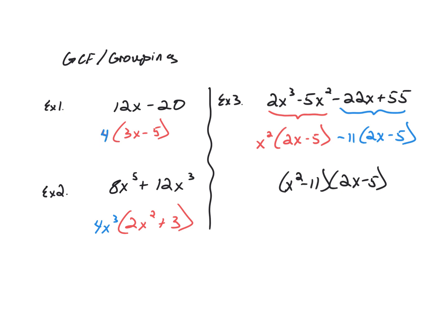12 is divisible by 4 and 20 is divisible by 4, and that's the largest number that goes into both. We take out the 4, and the other factor remaining is what we multiply 4 by to get back to the original. So 4 times 3x is 12x, and 4 times negative 5 is negative 20. These are the two factors of that polynomial.